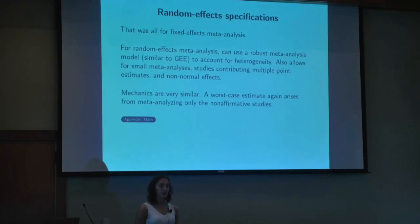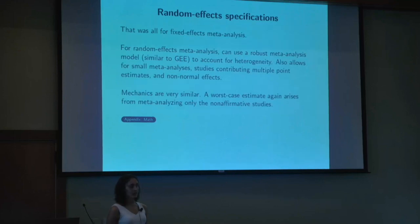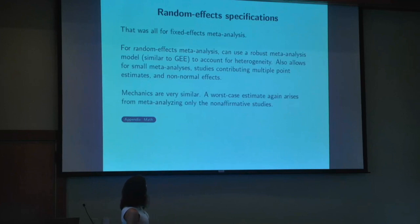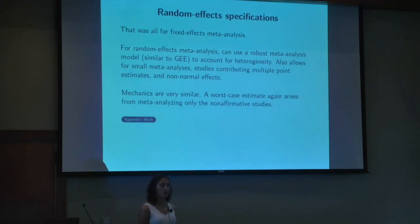In general with meta-analyses we want to accommodate heterogeneity, so we fit random effects models. We've developed methods that work in that case — they accommodate heterogeneity and obviate some challenging assumptions of existing publication bias methods. They allow for arbitrarily small meta-analyses with correct inference, allow for clustering of point estimates where some studies contribute multiple estimates, and they're distribution-free with respect to the distribution of true effects. Once again, the worst-case estimate arises from meta-analyzing only those non-affirmative studies.